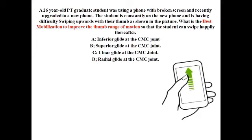The radial glide is used to improve thumb extension to help sweep upwards at the CMC joint. The trapezium is convex and the proximal metacarpal is concave for flexion and extension.